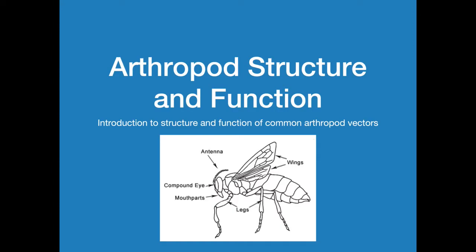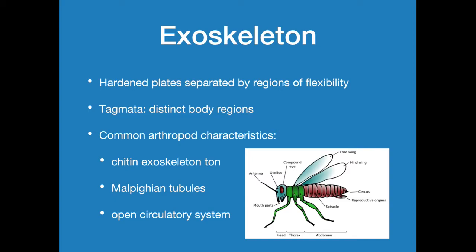Hello and welcome back. We are looking at lecture 1.2 here, Arthropod Structure and Function, and this is just an overview. Most of you have taken some type of taxonomy or identification course. The actual structure of most arthropods is already familiar. So this will be a really quick lecture — more of a review. Towards the end of the lecture, we will address more about feeding behaviors and mouth parts, since those are most related to what we're looking at: vectors of disease.